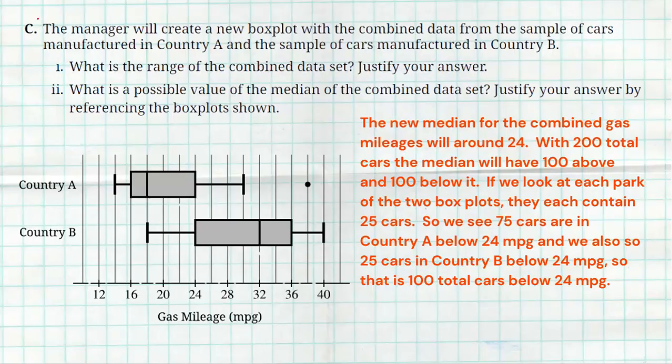So, every one of these chunks has 25 cars in it, 25 cars, 25 cars, and then this chunk right here has 25 cars as well. So, I estimate the median to be around 24, and here's my justification. Below 24, I see 100 cars, the 25 here, the 25 here, the 25 here, and the 25 down below Q1 for Country B.